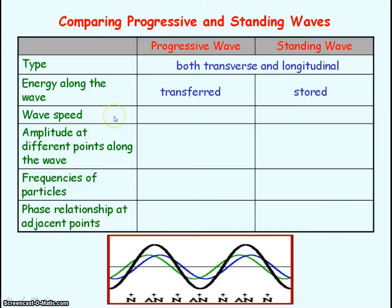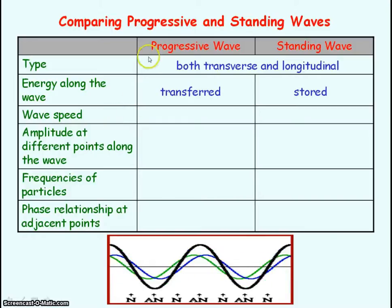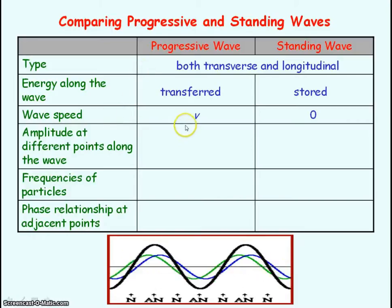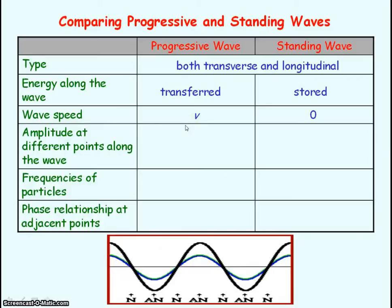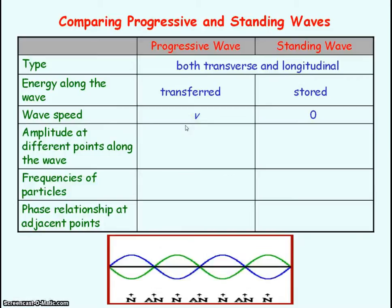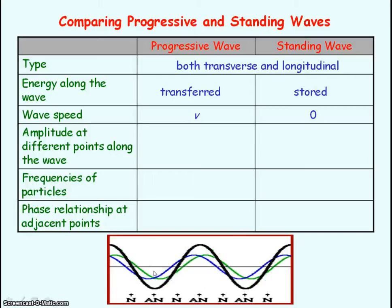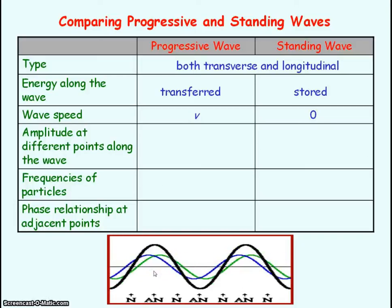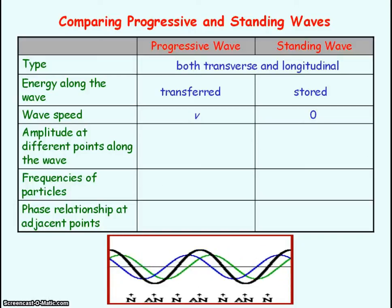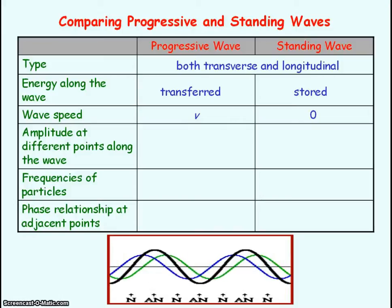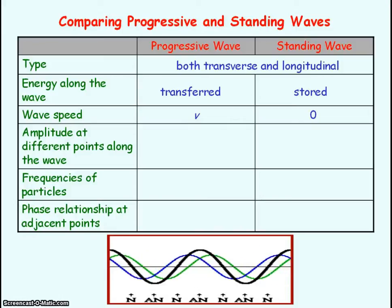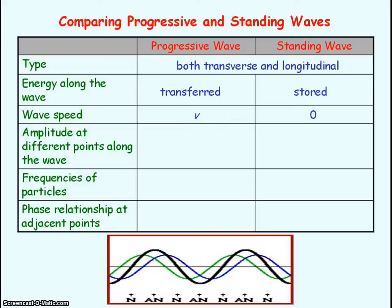Regarding wave speed or wave velocity: progressive waves have a velocity V, whereas standing waves are stationary, so their velocity is zero. They are made up of two progressive waves travelling in opposite directions — one wave has velocity V and the other has velocity minus V — so the overall velocity of the standing wave is zero.